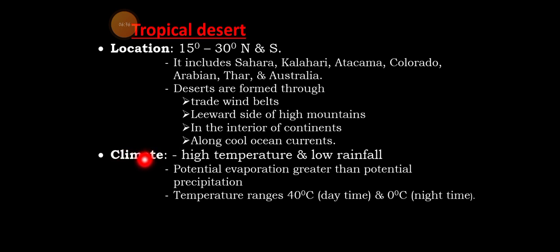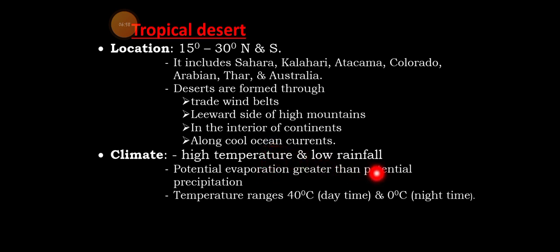The climate of the tropical desert is extreme. Potential evaporation is greater than potential precipitation. Both potential evaporation and potential precipitation are very important factors in understanding desert climate. Temperature ranges can reach up to 40 degrees Celsius.